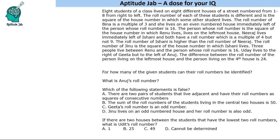Welcome to Aptitude Jab. This is a site-based arrangement problem. There are eight students of a class who live in a street where the houses are numbered one to eight from right to left. The roll number of these students is the square of a house number, but it is different from the house number in which the person lives. So if a person lives in house number three, their roll number might be the square of five — meaning the square of some other student's house number.